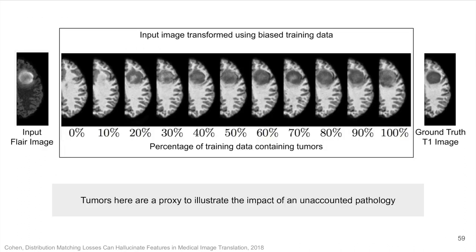Here are generated images from 11 different CycleGANs, all trained with a different biased ratio of samples with tumors. The model is transforming from a FLAIR MRI image to a T1 MRI image. If no tumors are present in the training data, we can see that the model tries to remove the tumor. And if the training dataset is all tumors, then the tumor is enlarged. Here, we consider tumors as a proxy for some unknown pathology that may be present in the data at an unknown proportion.